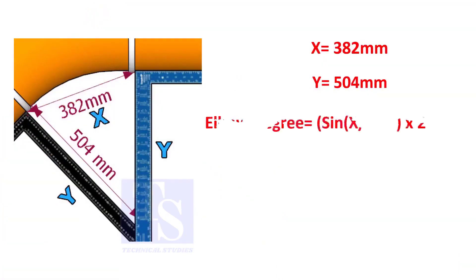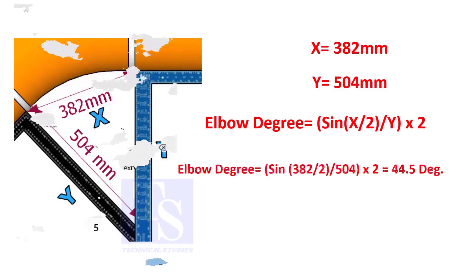Assume that the value of X is 382 and the value of Y is 504. Divide the half value of 382 by 504, and convert the value to sine, then multiply by 2.